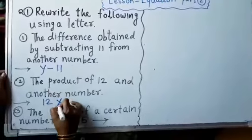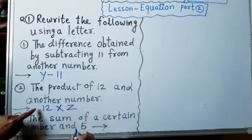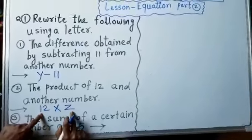And here, what is product? So, product. Another number. Let us consider z. Product of 12. Product of 12 and z.